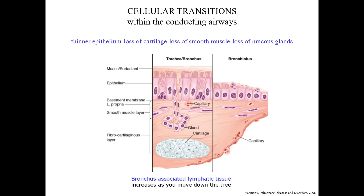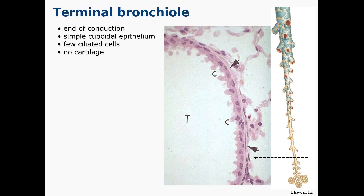Here's another review image that summarizes the structural changes that occur as we move down the conducting zone from the trachea to the bronchi to the bronchioles. The smallest bronchioles are the terminal bronchioles, which mark the end of conduction. The terminal bronchiole and the associated region of pulmonary tissues it supplies constitutes a pulmonary lobule. The terminal bronchiole contains elastic fibers and smooth muscle whose contraction is controlled by the autonomic nervous system. These bronchioles have simple cuboidal epithelium and lack goblet cells.